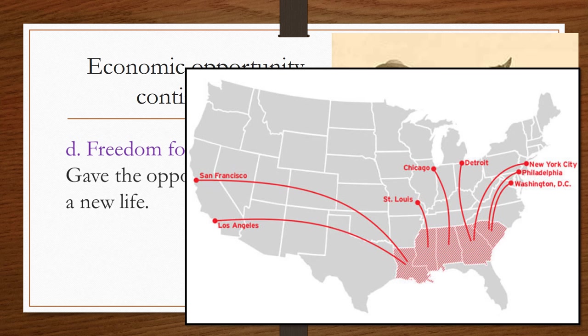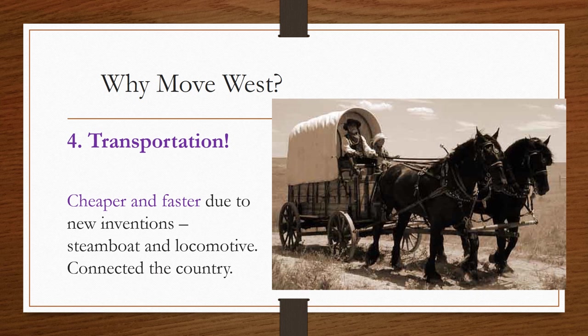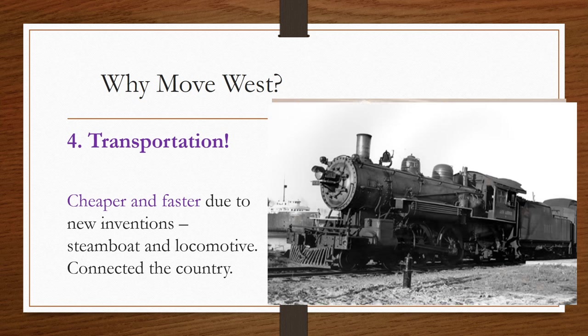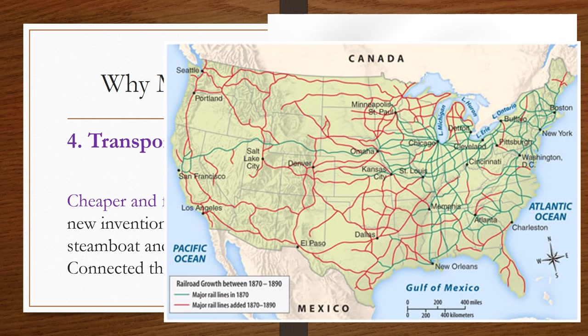Another reason to move west — number four — was transportation. Out west there was really only one way to travel: by wagon, horses, or on foot. But as new inventions became available, more and more people found it easier to travel westward. One of those inventions was the locomotive, or train, which provided a cheap and fast route to get out west that had never been available before. Check out this railroad growth map between 1870 and 1890.